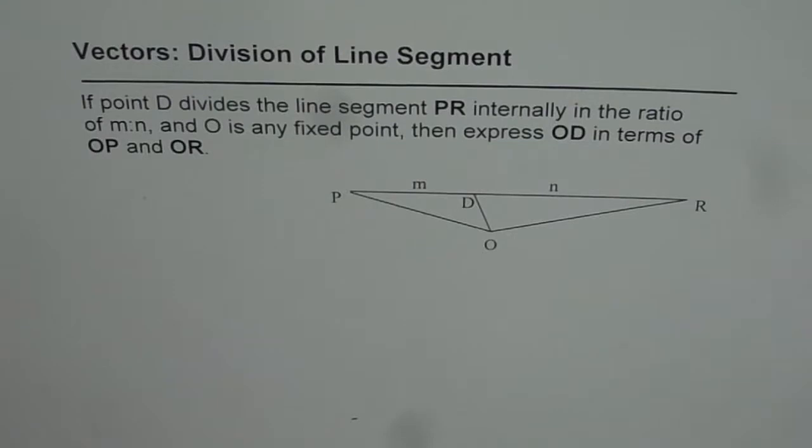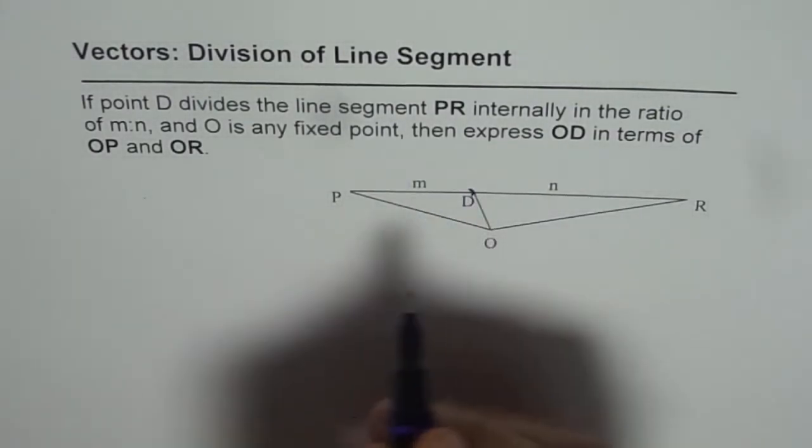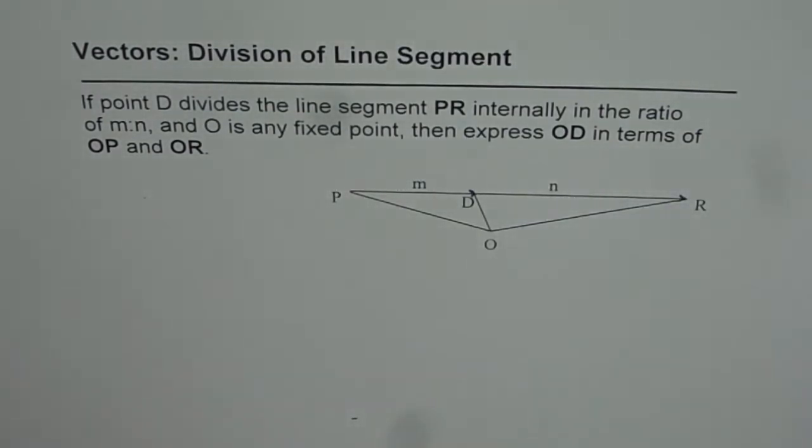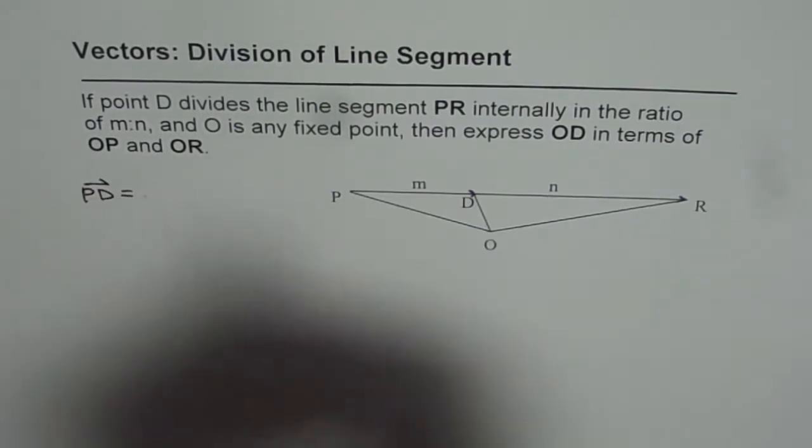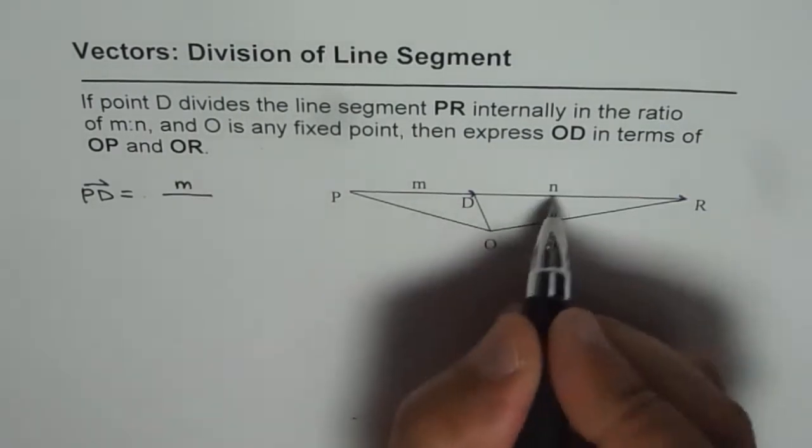Now as you can see from here we can write what PD is in terms of PR. Vector PD equals M over M plus N times PR.